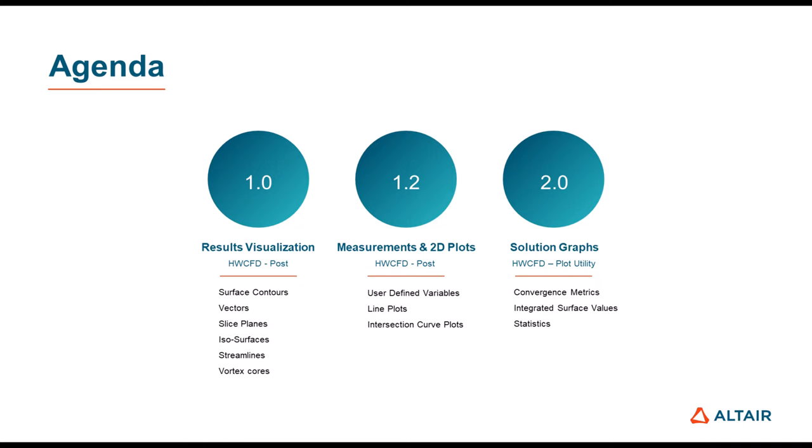The first and larger part of this video will be about the HyperWorks CFD post-tab, mainly focusing on visual results like surface contours, slice planes, isosurfaces, and streamlines. The second part will be about the plot utility, where we will extract numerical values and graphs checking the convergence metrics of the simulation as well as the behavior of flow variables along the solution time steps.